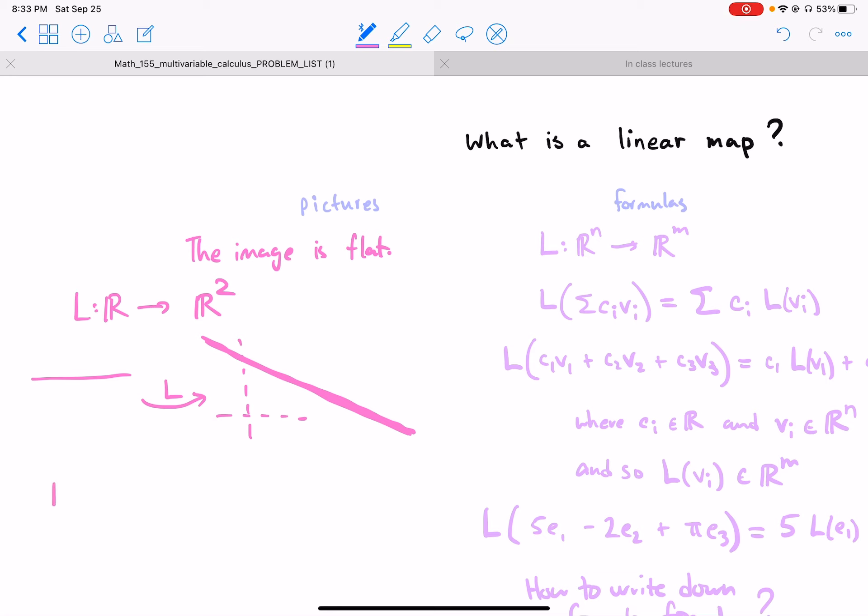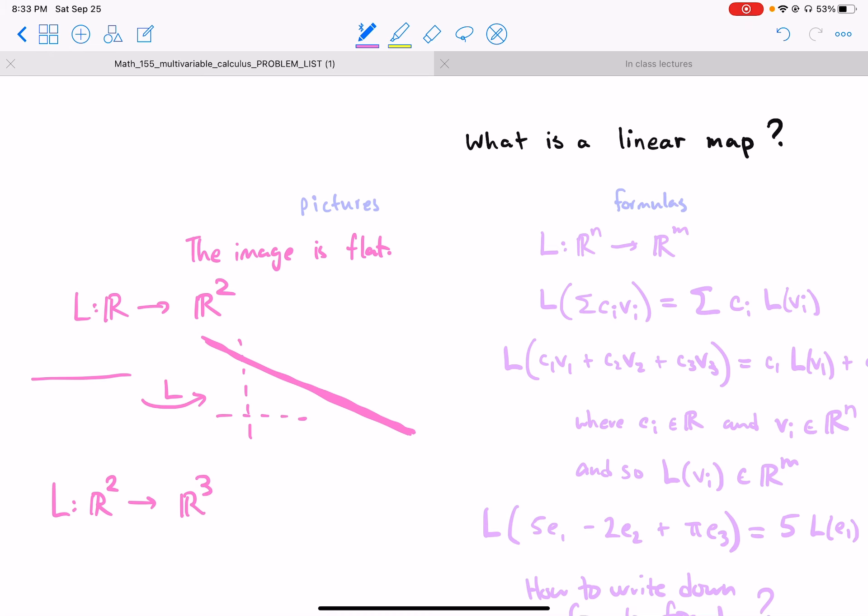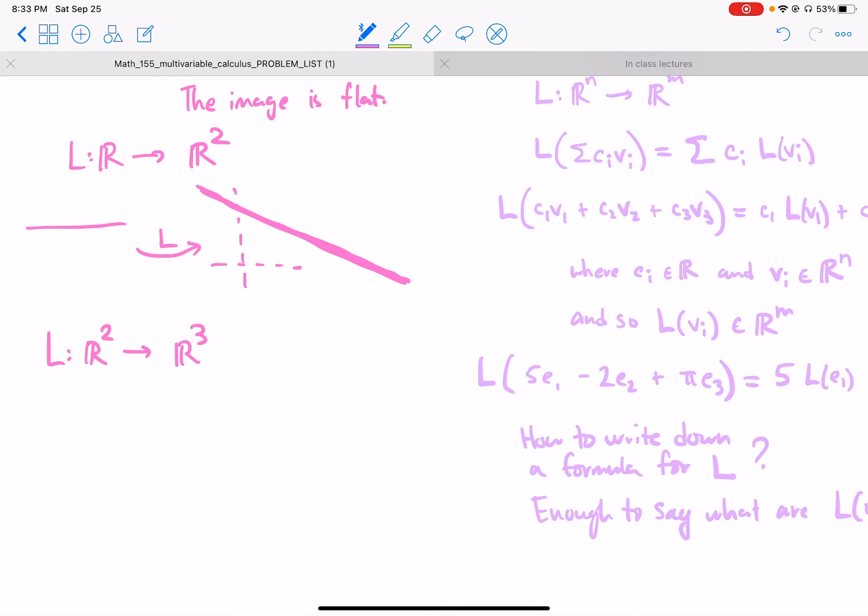Let's say L is a map from R2 to R3. Then, well, it takes the plane R2, and let's say it takes this rectangle—or no, let's even just look at this rectangle here. Where does it take it? Well, if L is linear, then it has to take it to some parallelogram